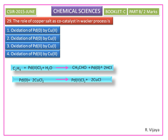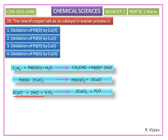In cupric chloride, copper is in the +2 oxidation state. The product is cuprous chloride (CuCl), where copper is in the +1 oxidation state. This cuprous chloride is then oxidized back into cupric chloride.